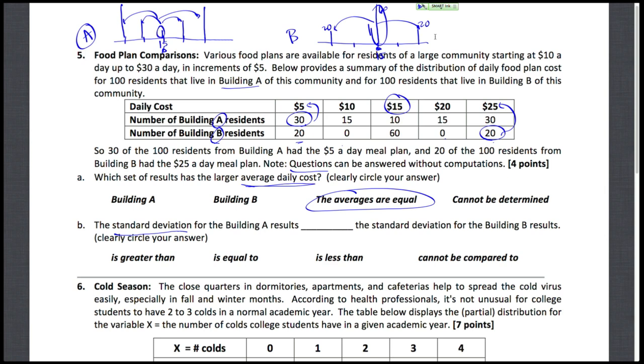But on our Building A distribution, very few are right at the mean. In fact, the highest counts are for those two values that are the furthest away from the mean, contributing a large distance in a lot of them, so their weights are more. And another group are a bit further out from the mean, too. So the standard deviation for Building A is going to be much larger, greater than that for Building B.